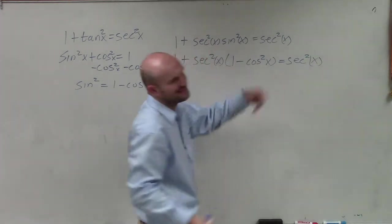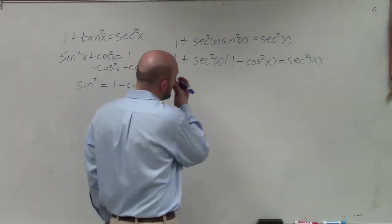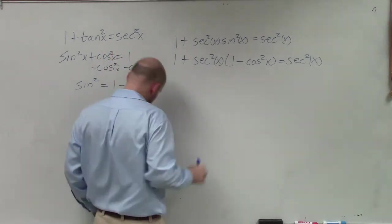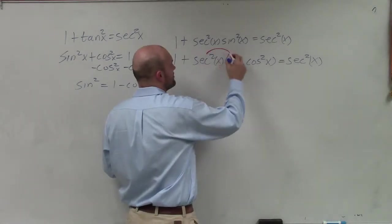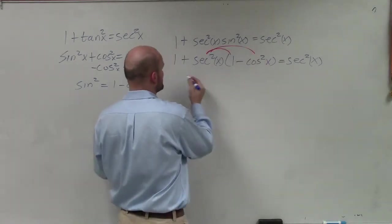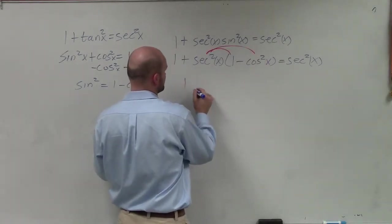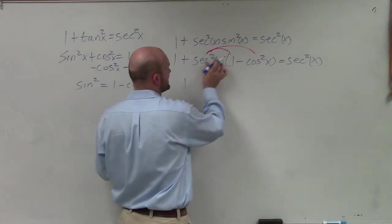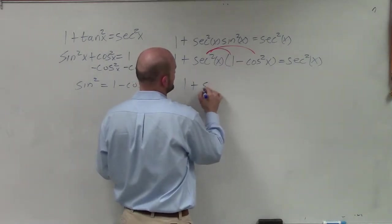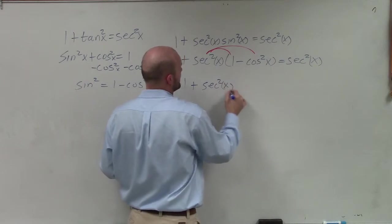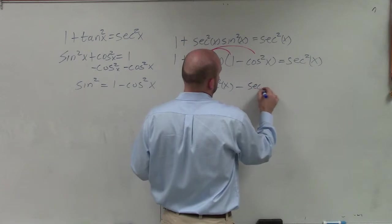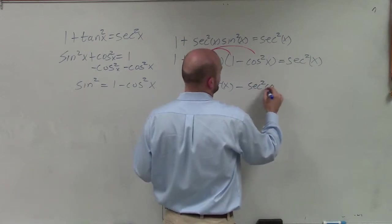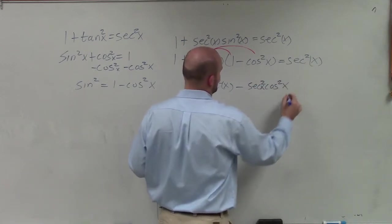All right? Well, we don't really need to keep on writing the right-hand side. I'm just going to keep on simplifying. So anyways, I notice that my secant squared of x, I'm going to have to use distributive property here. So I apply distributive property. I have 1. And then secant squared times 1 is going to be positive secant squared of x. And then secant squared times a negative cosine squared is going to be a negative secant squared of x times cosine squared of x.